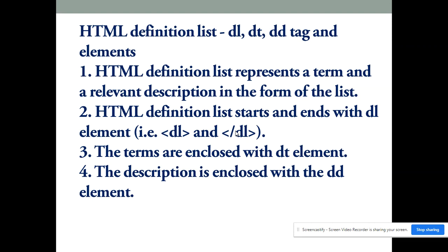It has three elements: DL, DT, and DD. HTML definition list represents a term and a relevant description in the form of a list. HTML definition list starts and ends with DL element.